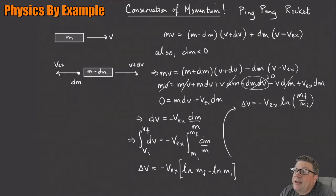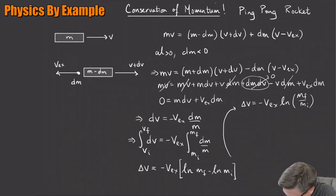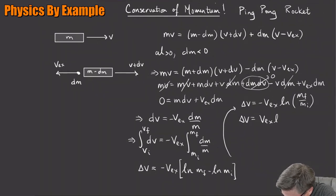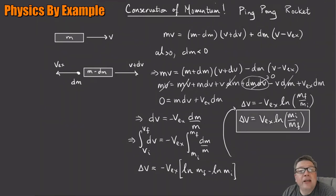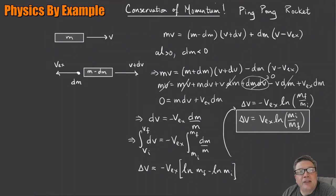Using log properties, the difference of two logs is the log of the ratio: delta-v = −v_exhaust · ln(m_final / m_initial). Bringing the negative sign inside the log flips the fraction, giving us the final result: delta-v = v_exhaust · ln(m_initial / m_final). This is called the rocket equation — it tells you the speed change of the rocket from the ratio of initial to final mass and the exhaust speed.